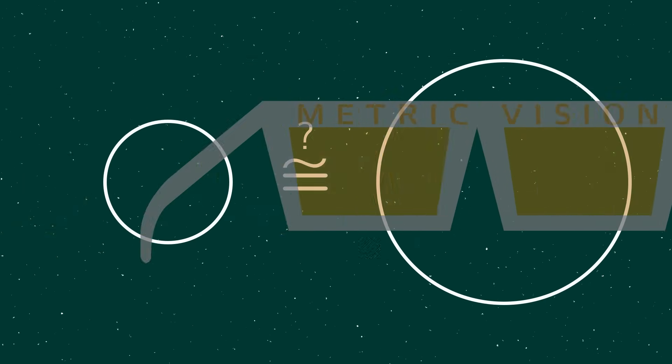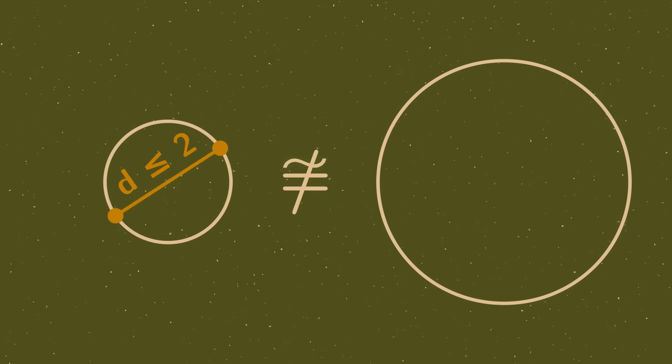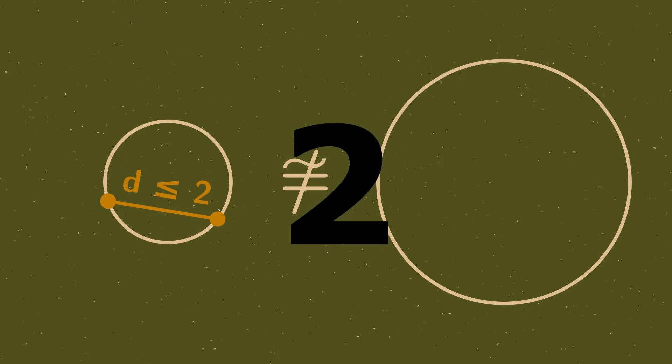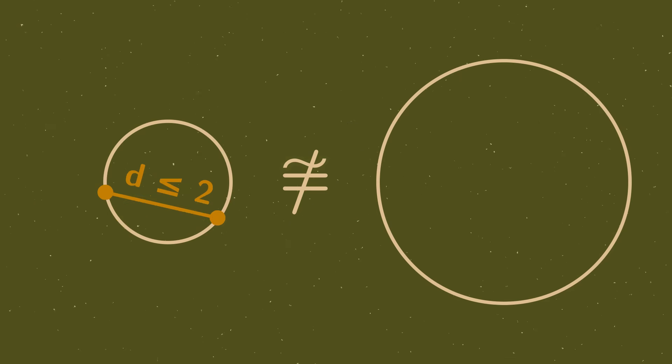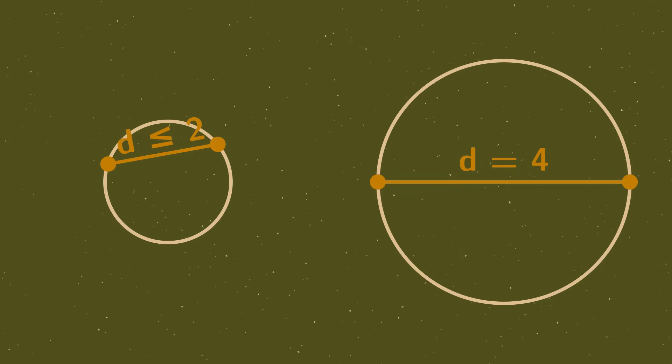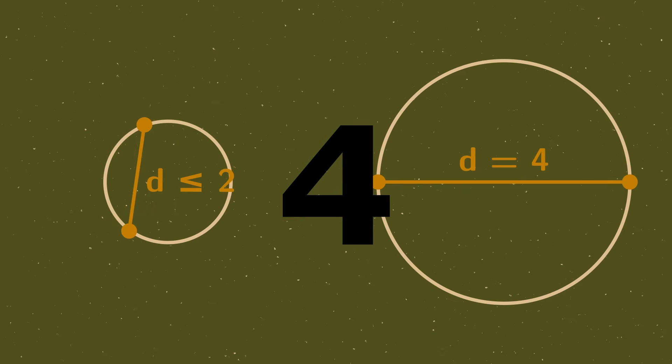On the other hand, as metric spaces, these are not the same. There is no isometry, no isomorphism of metric spaces between these, because any two points in the unit circle are distance at most one apart, whereas there are pairs of points in the larger circle whose distance from each other is two. So a distance preserving bijection between these is impossible.